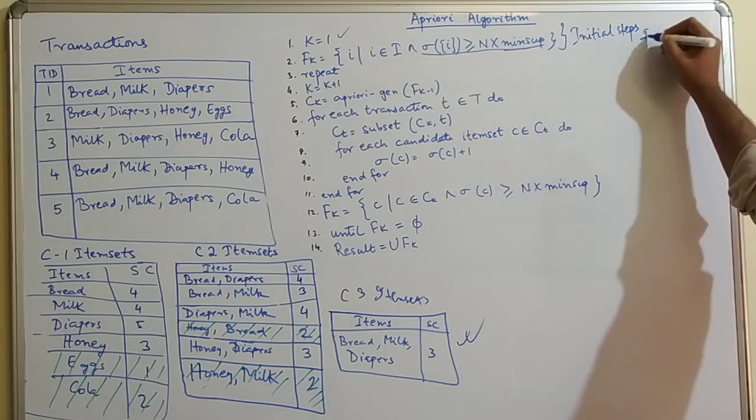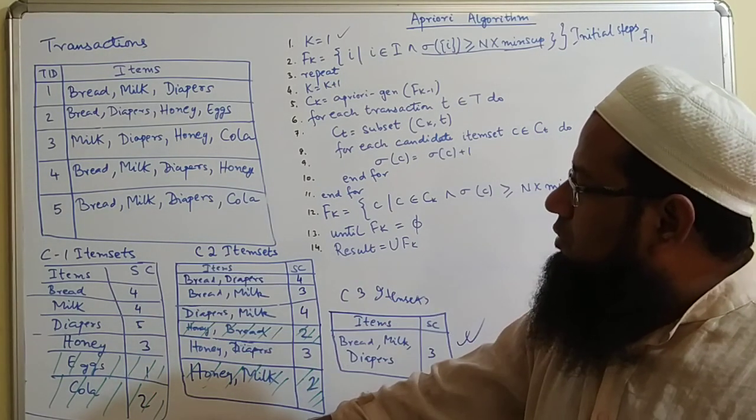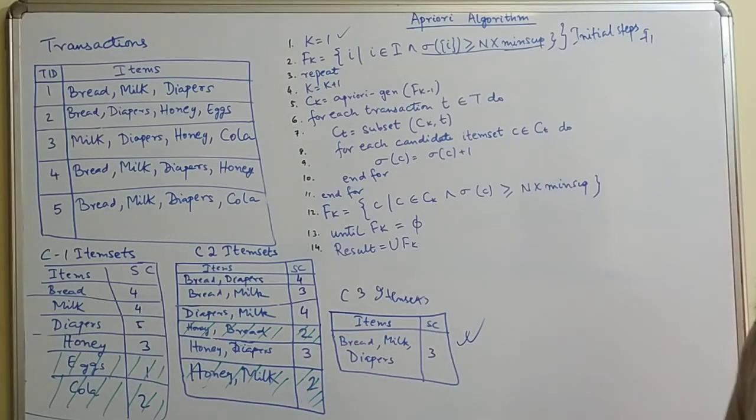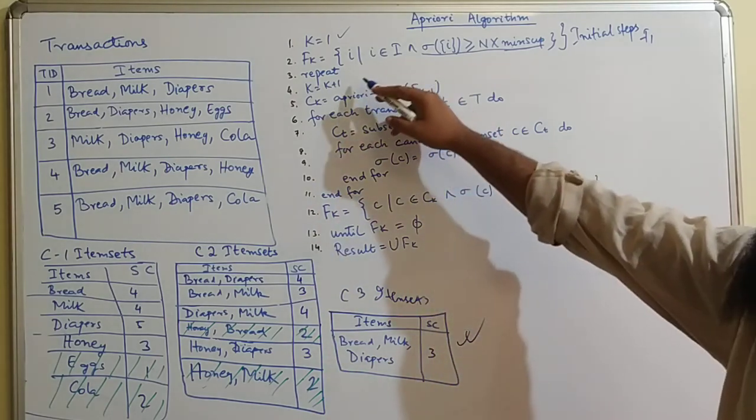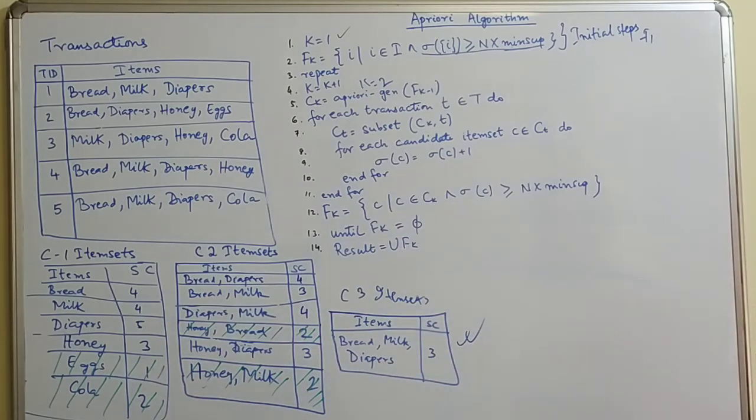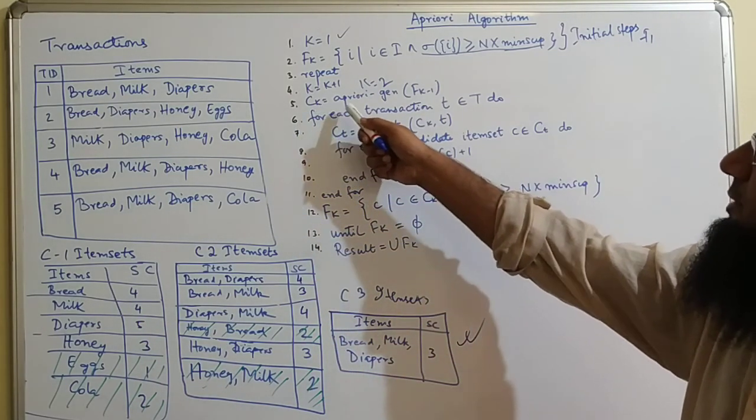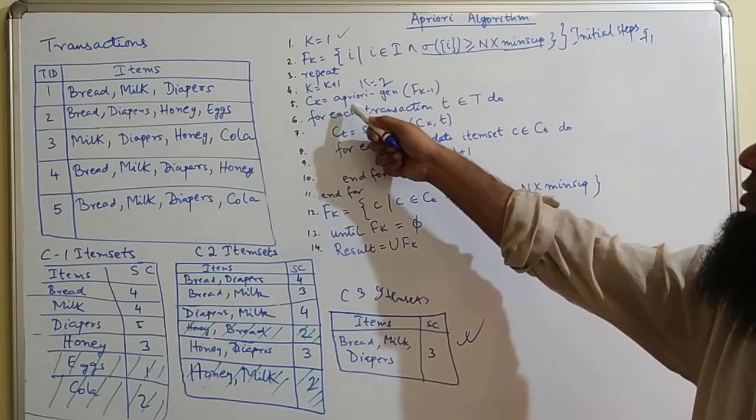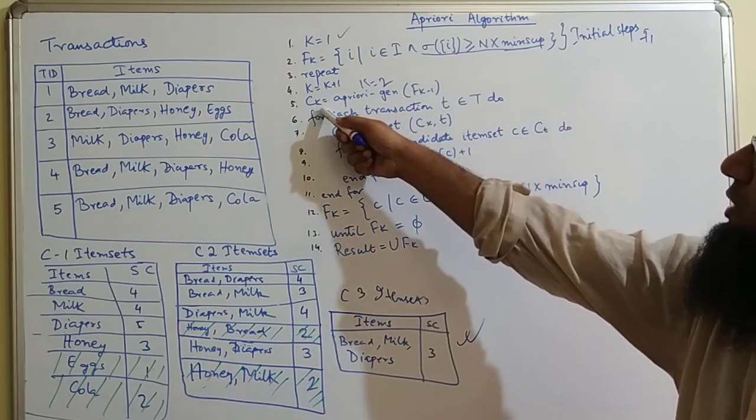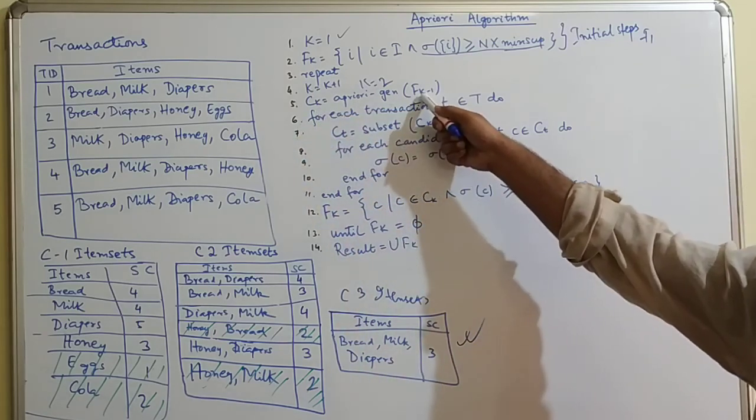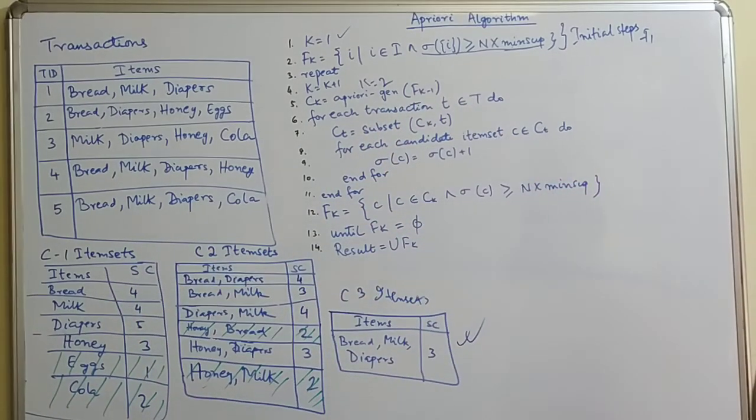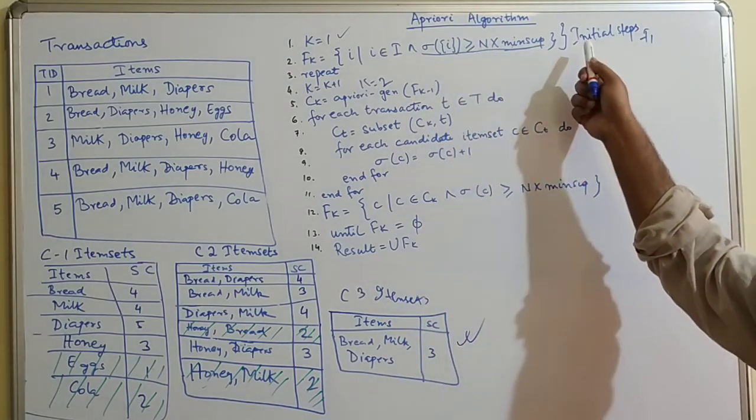Once we get f1, we got bread, milk, diaper, honey, egg, and cola. Repeat k equals k plus 1, so k will be 2 now. You have to get all the candidate item sets: c of k equals f of generation f of k minus 1. That means you're going to get c2 from f of 1, from the previous item set that satisfied this condition.